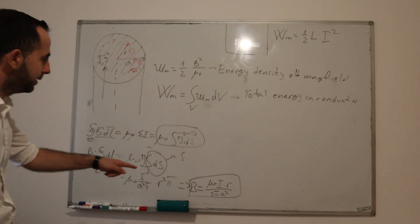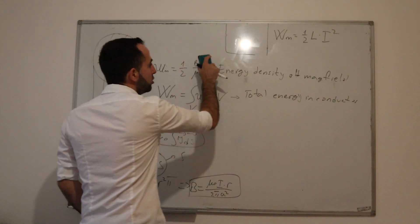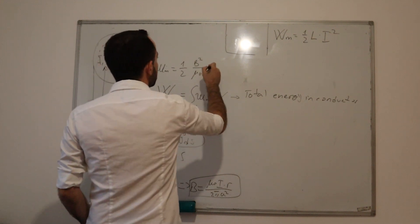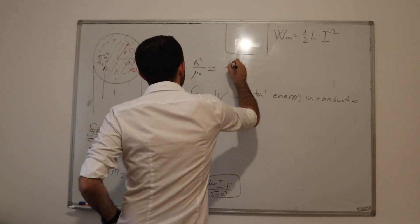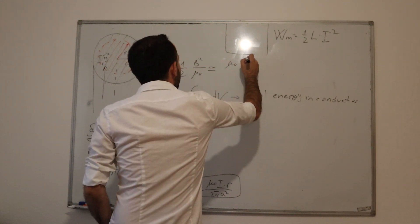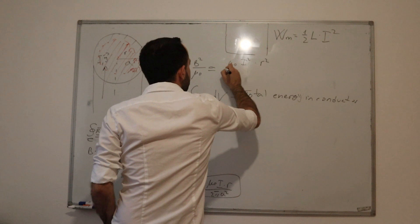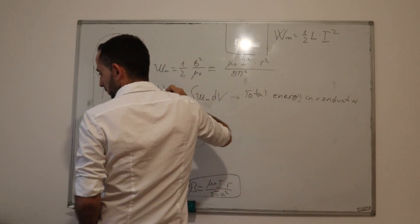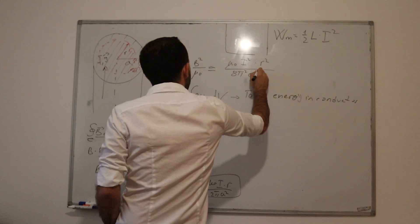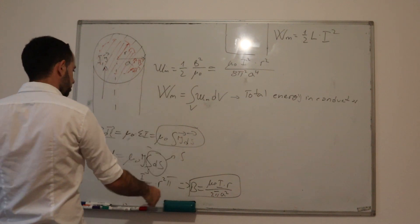This is our B. When we put this B inside of this, we will get that our energy density of magnetic field is equal to μ₀I² times R² divided by 8π²A⁴. Now we need to calculate total energy.